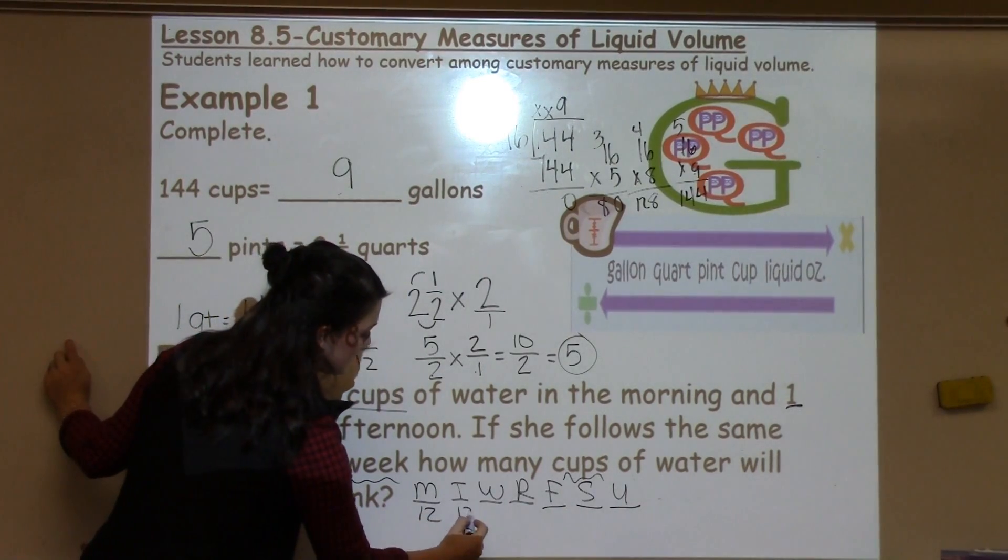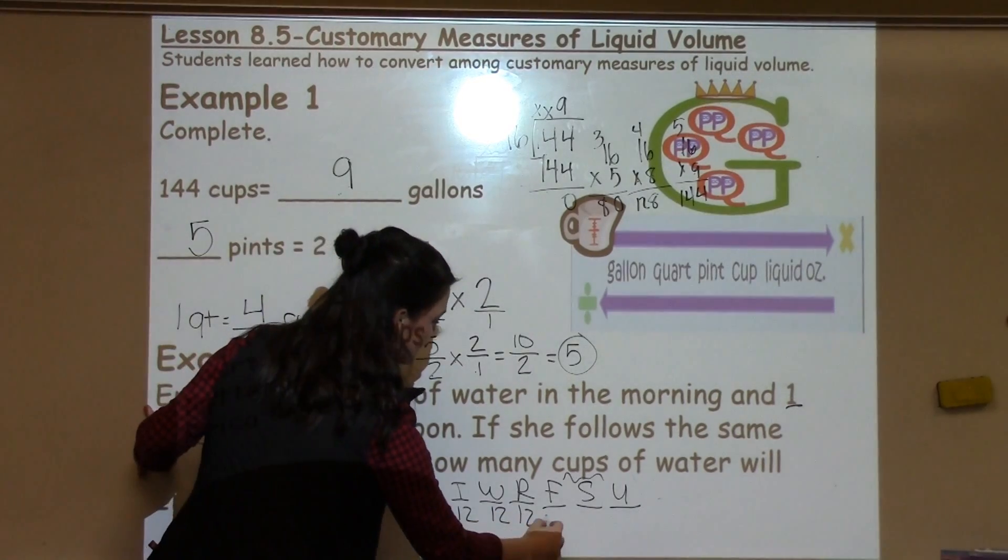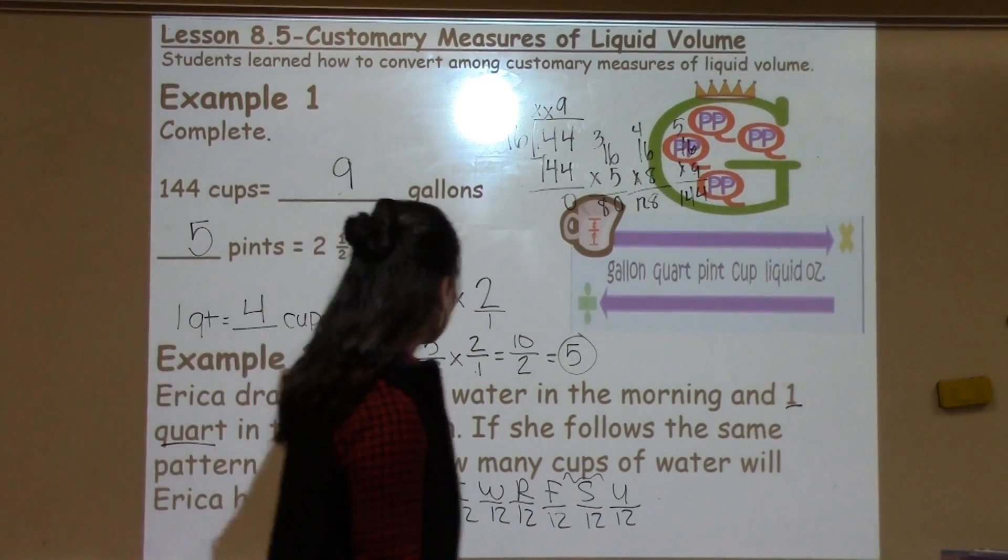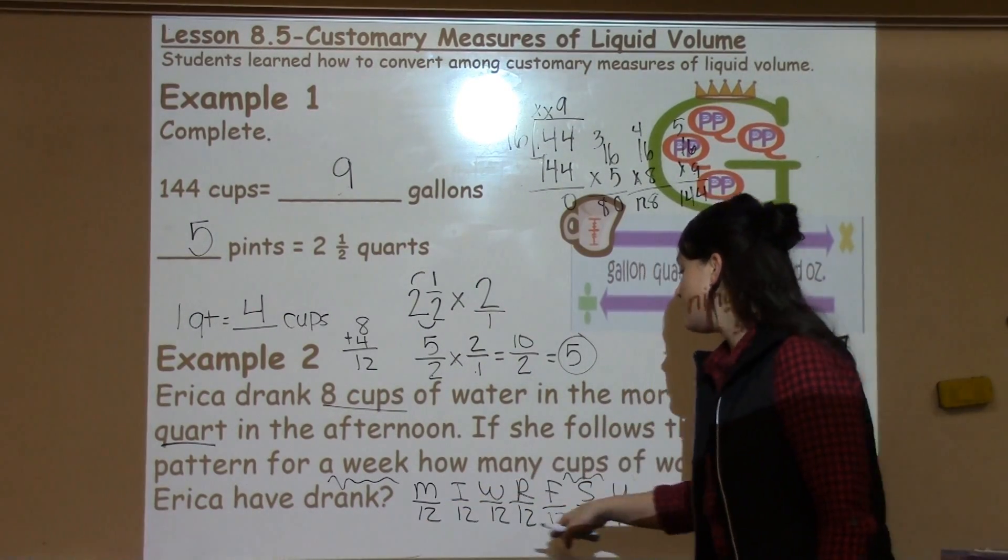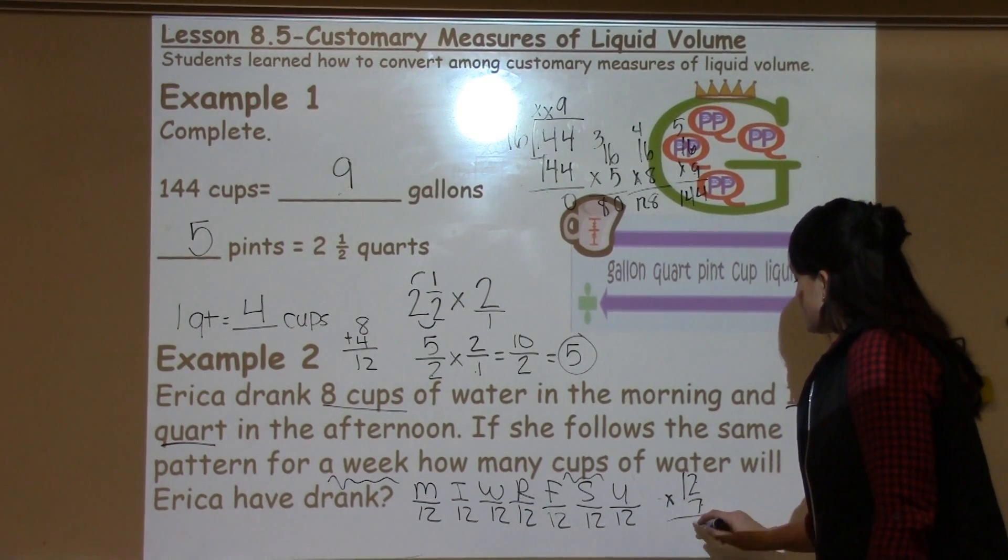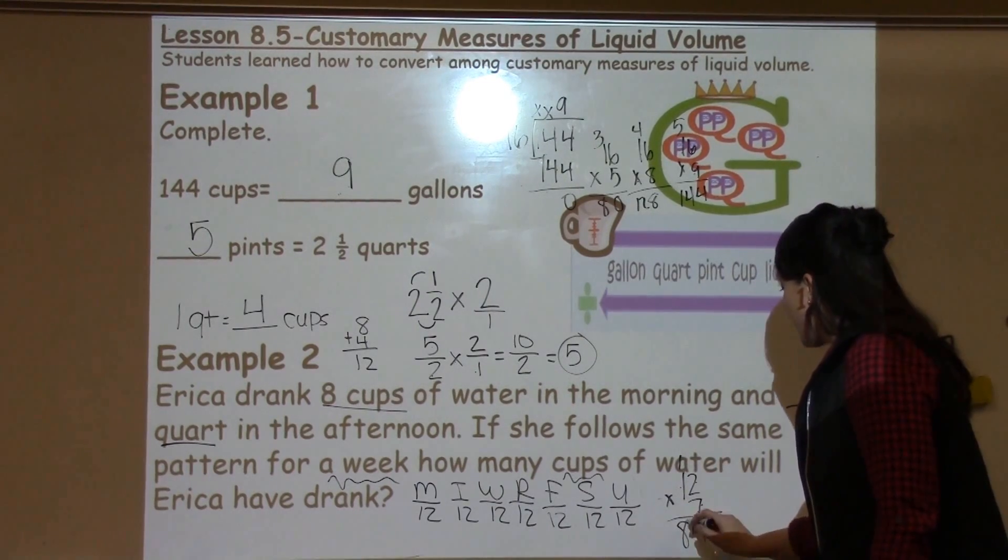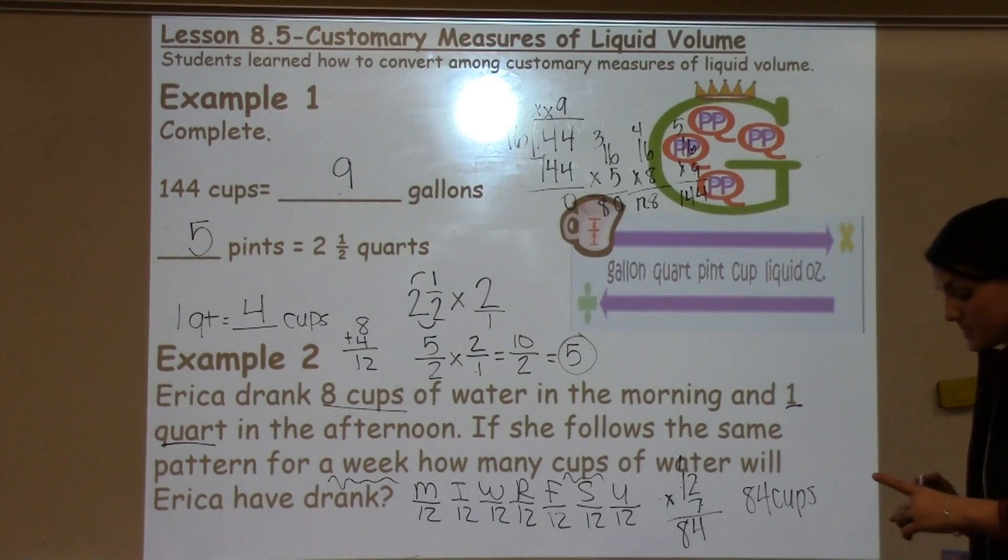So, just giving you that visual helps me see that I'm going to have to take 12 times 7 to add all of those up. 7 times 2 is 14, carry the 1. 7 times 1 is 7, plus 1 is 8 for a final answer of 84 cups.